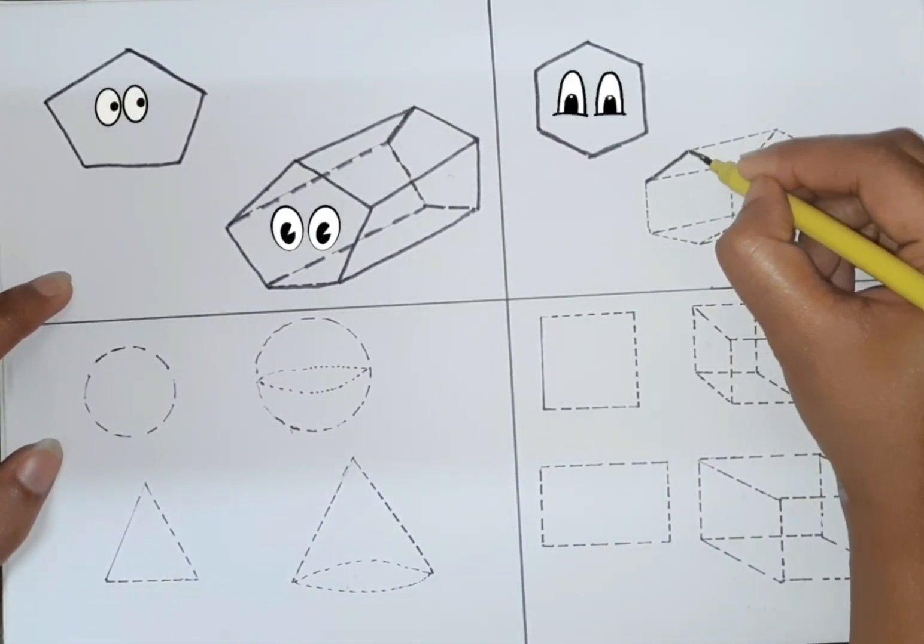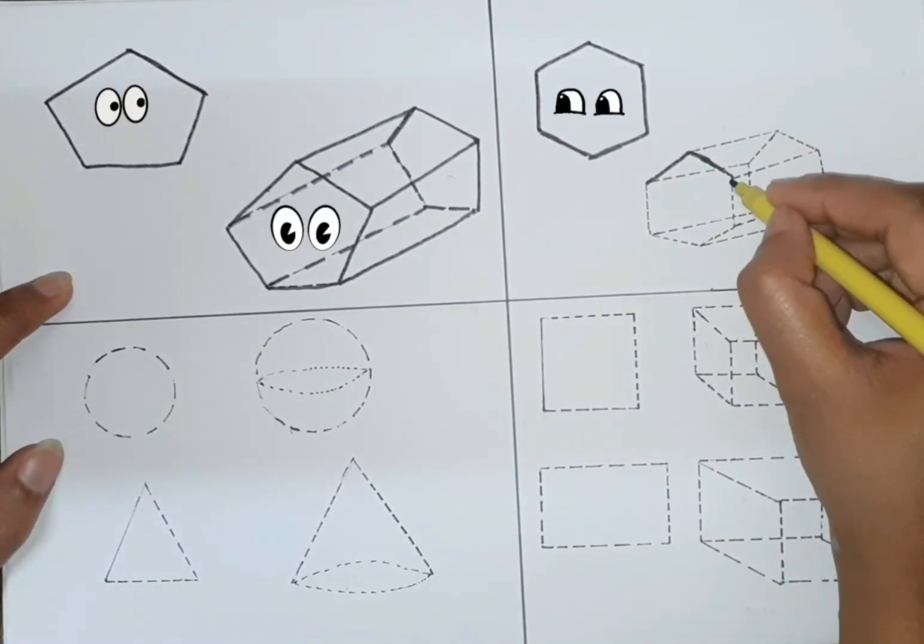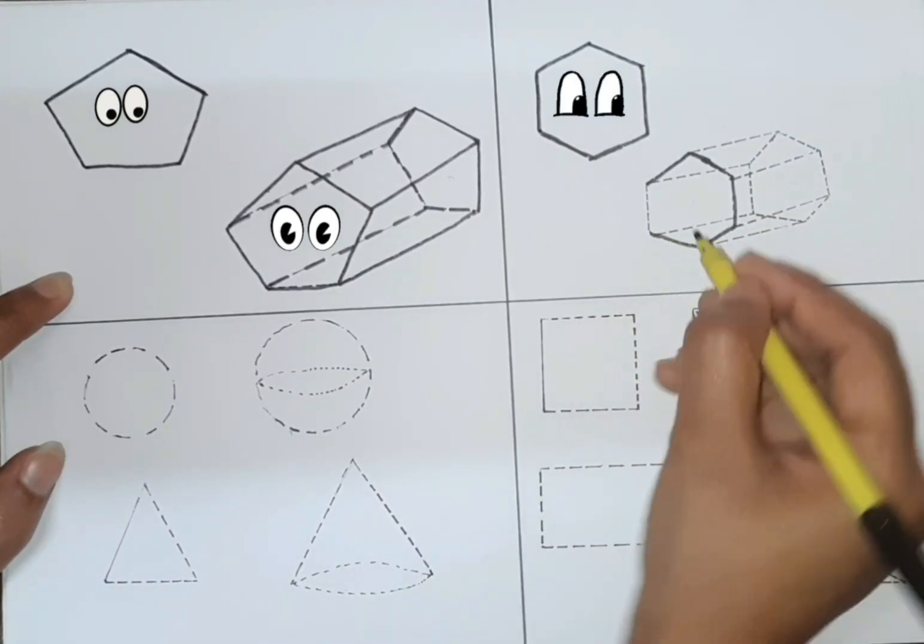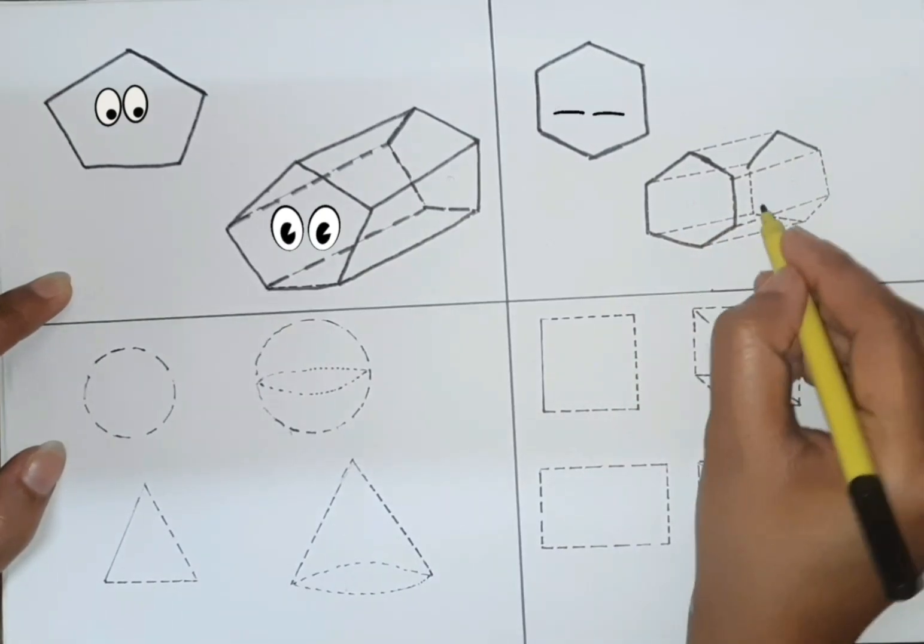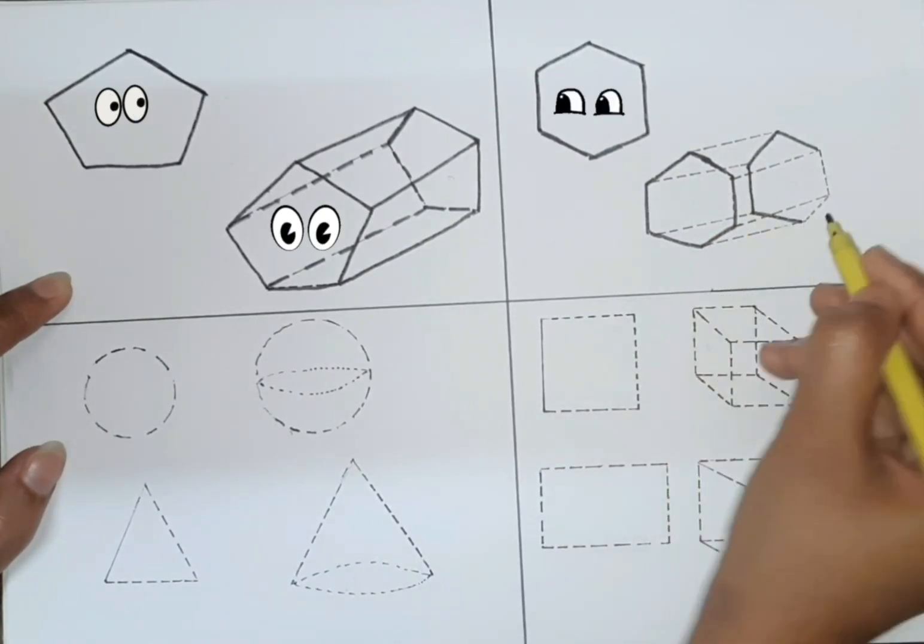Now we are drawing hexagon. Hexagon has 6 sides. We can count it by its corner. It has 6 sides. Hexagon.